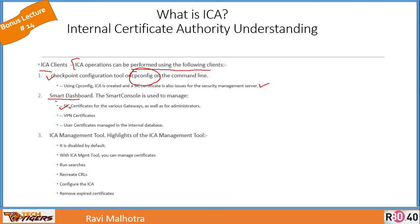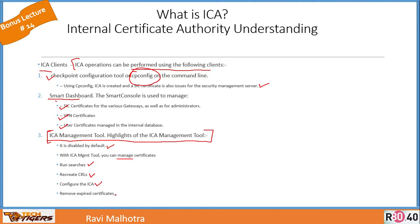The second client is the SmartDashboard. The SmartConsole is used to manage SIC certificates — this is how we establish SIC between the gateway and the SmartCenter. It also manages VPN certificates and user certificates in the internal database. The third client to manage ICA is the ICA Management Tool, which is a wonderful tool for managing the certificate authority. It's a kind of dashboard to manage the certificate authority. With it, you can manage certificates, run searches, recreate CRLs, configure the ICA, and remove expired certificates.